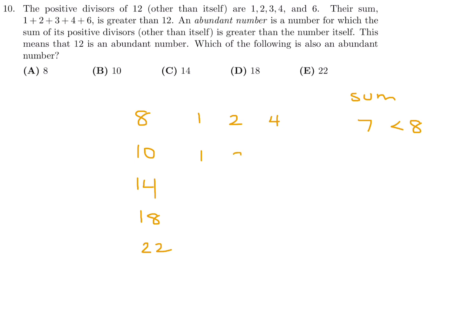Let's keep going. Here it's 1, 2, and 5. The sum is 8. 8 is less than 10. So again, not abundant. Here the positive divisors are 1, 2, 7. The sum is 10. 10 is less than 14.